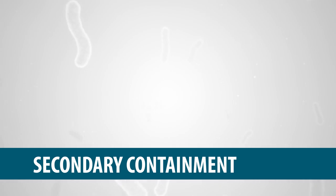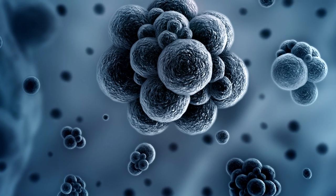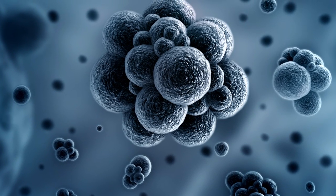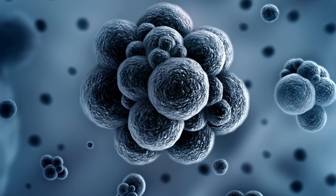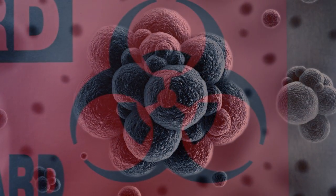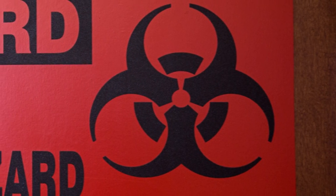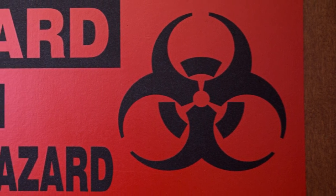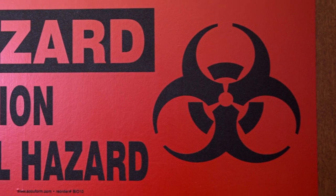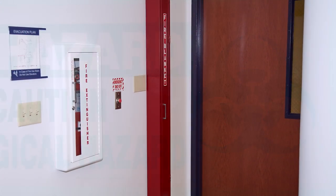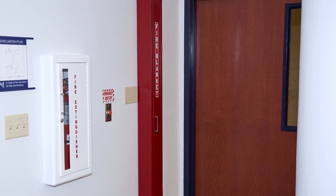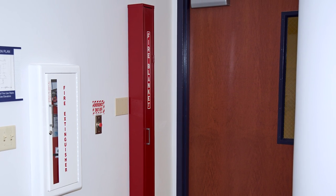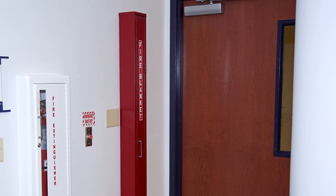Secondary Containment deals with protecting the outside environment from exposure to infectious organisms. It depends principally on the design of the laboratory and the availability of equipment. As well, laboratory workers should maintain the lab's safety features, such as keeping a closed door closed or leaving an exhaust fan on.